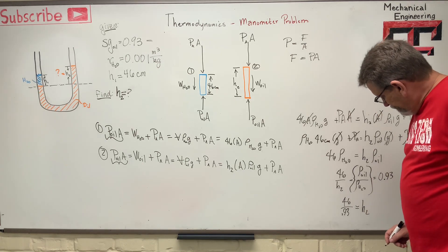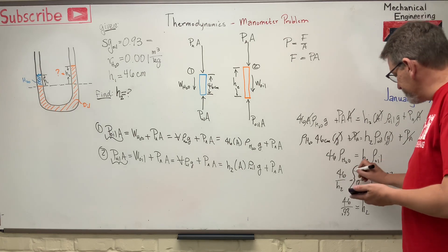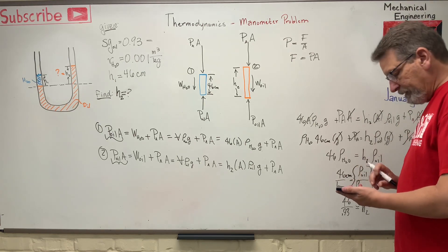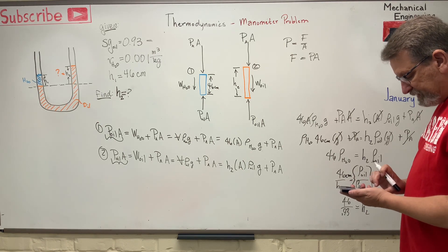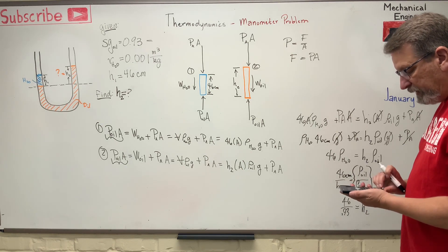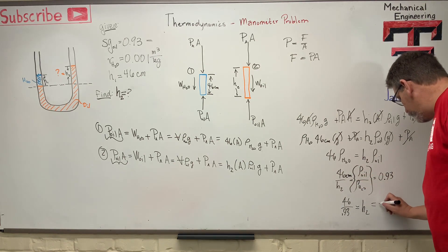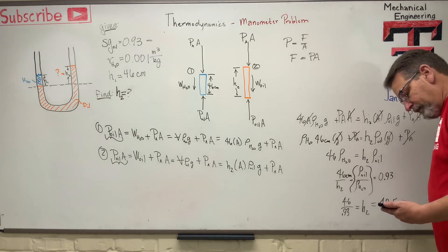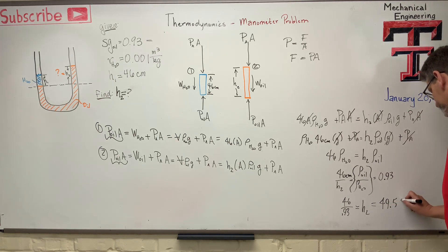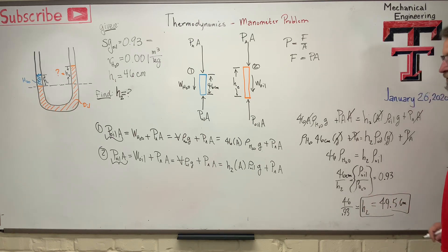And so, let me get my handy-dandy calculator here. And this is centimeters, right? Okay, my handy-dandy calculator says 46 divided by 0.93 is equal to 49.5-ish, 49.46 centimeters. So there you go. And there's your answer.